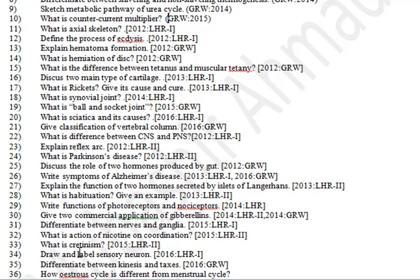What is the action of nicotine on coordination? What is cretinism? Draw and label a sensory neuron. Differentiate between kinases and taxins. How is the estrous cycle different from the menstrual cycle?